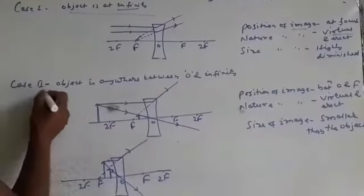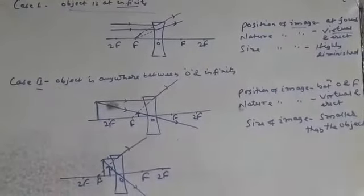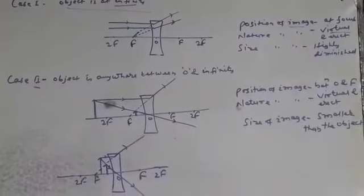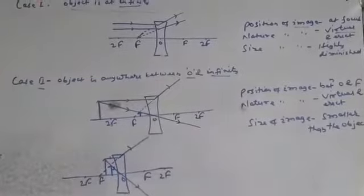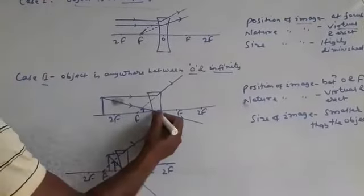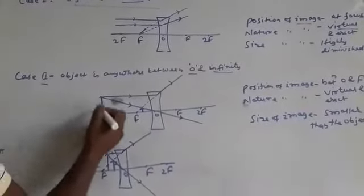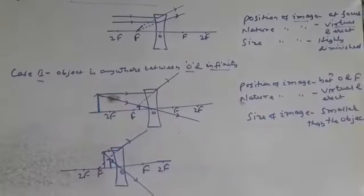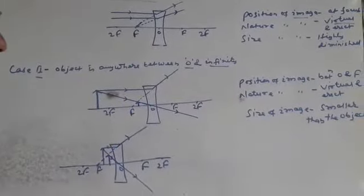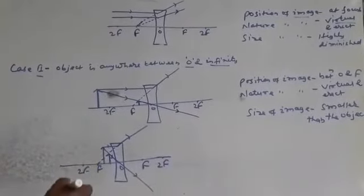Now case number 2. And last case. Object is anywhere between optical center and infinity. I have placed the object at this position. Once again, two light rays come from the top of the object.